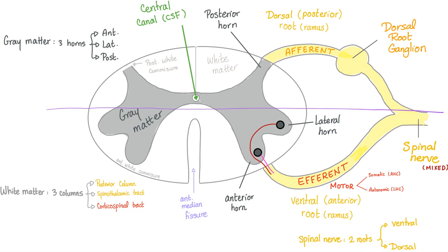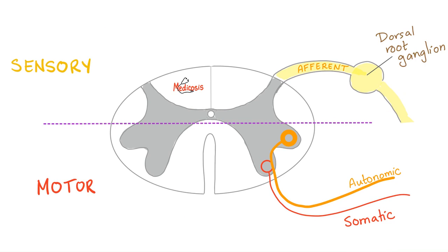How does the reflex arc work? Here is your hand — you touch something hot. That's a sensation. It goes inside via the sensory or afferent dorsal ramus, enters the posterior horn, and then goes directly to the anterior horn — there is a relay here. In the anterior horn, this is somatic motor — it flies through the efferent motor or ventral root to your muscles, telling your hand to get away from the heat. After this, the spinal cord sends signals to your brain so you may learn from your mistakes, but the reflex arc itself happened before your brain realizes what's going on.